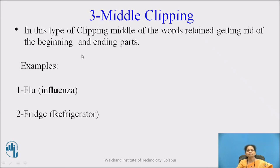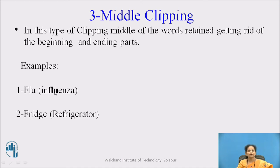The third one is middle clipping. In this type of clipping, the middle of the word is retained, getting rid of the beginning and ending parts. The first and last part is omitted; only the middle part is retained. Examples: 'flu' from 'influenza' — in this word, the middle part is only retained. 'Fridge' is a short form of 'refrigerator' — here also, the middle part is retained and the beginning and end are omitted.